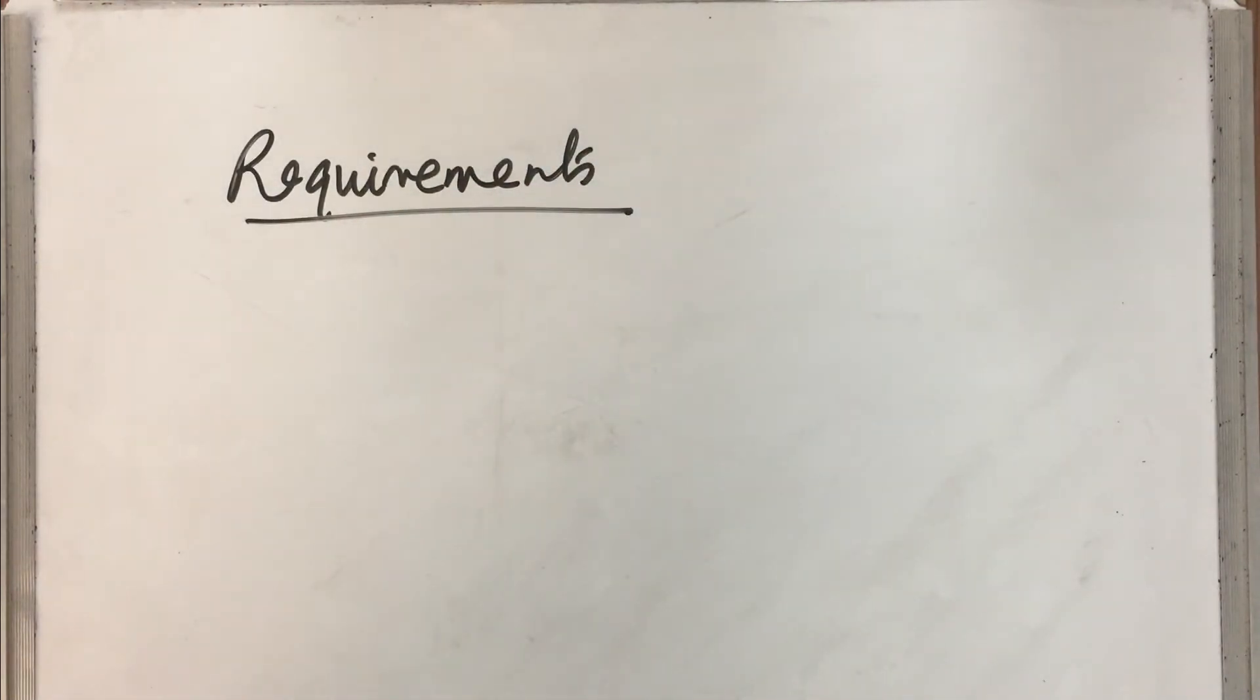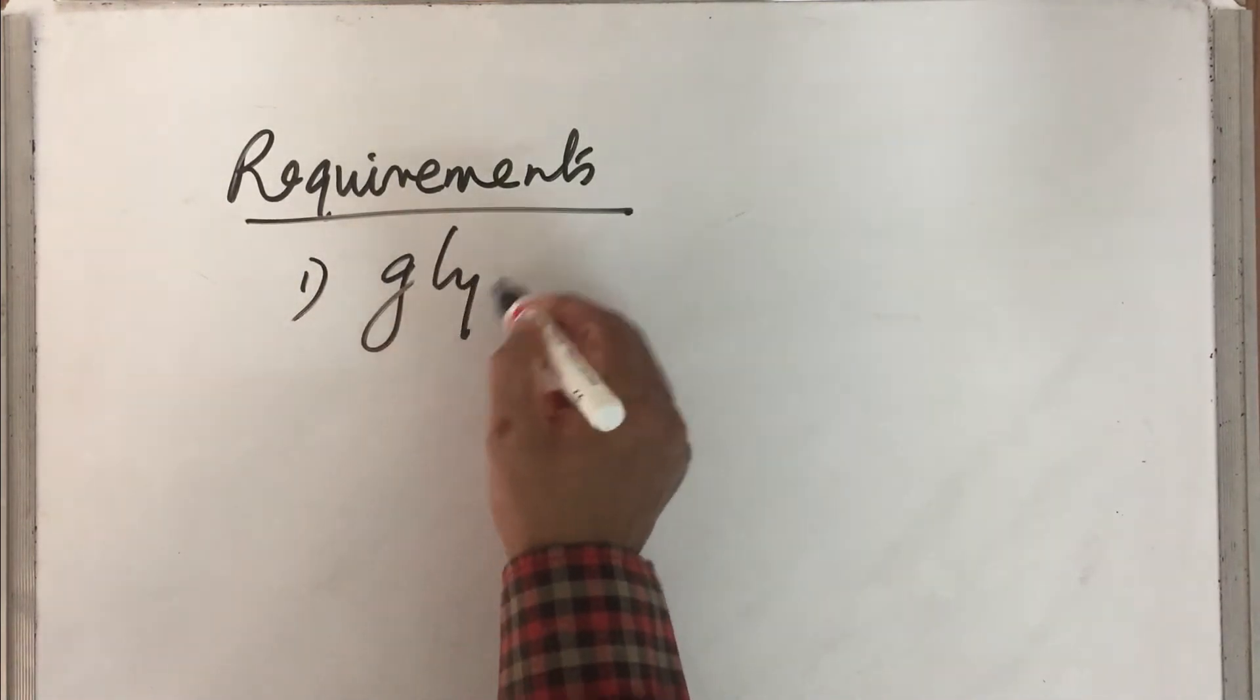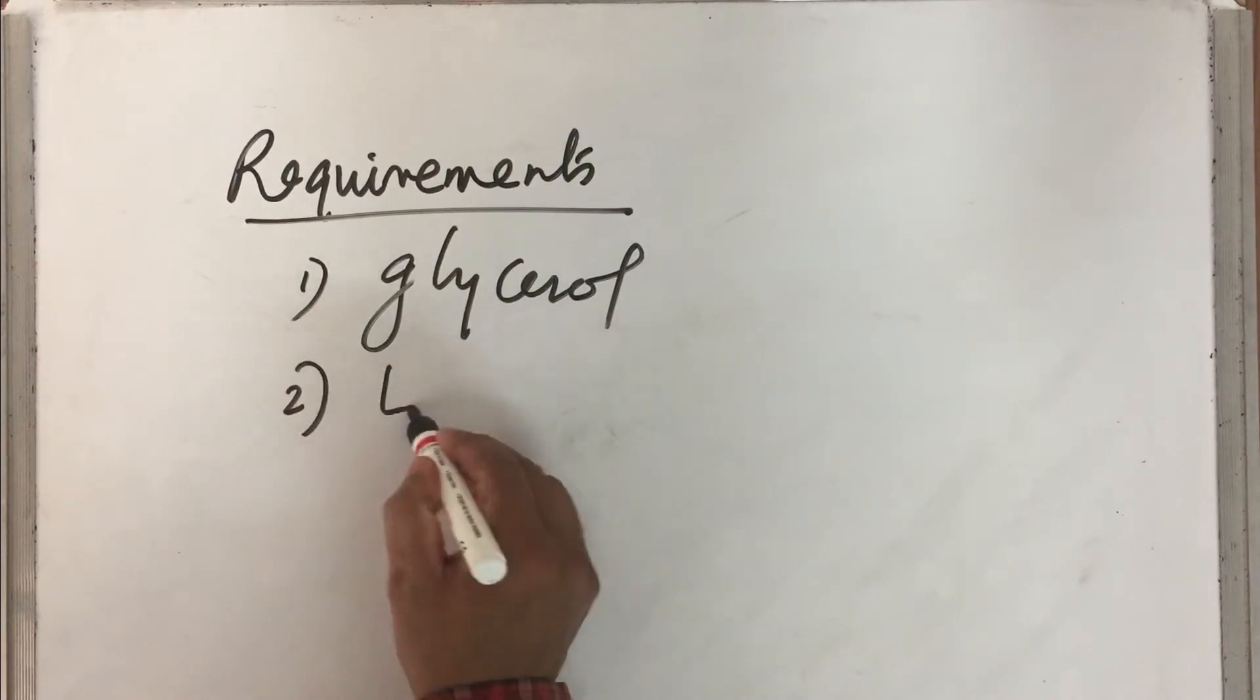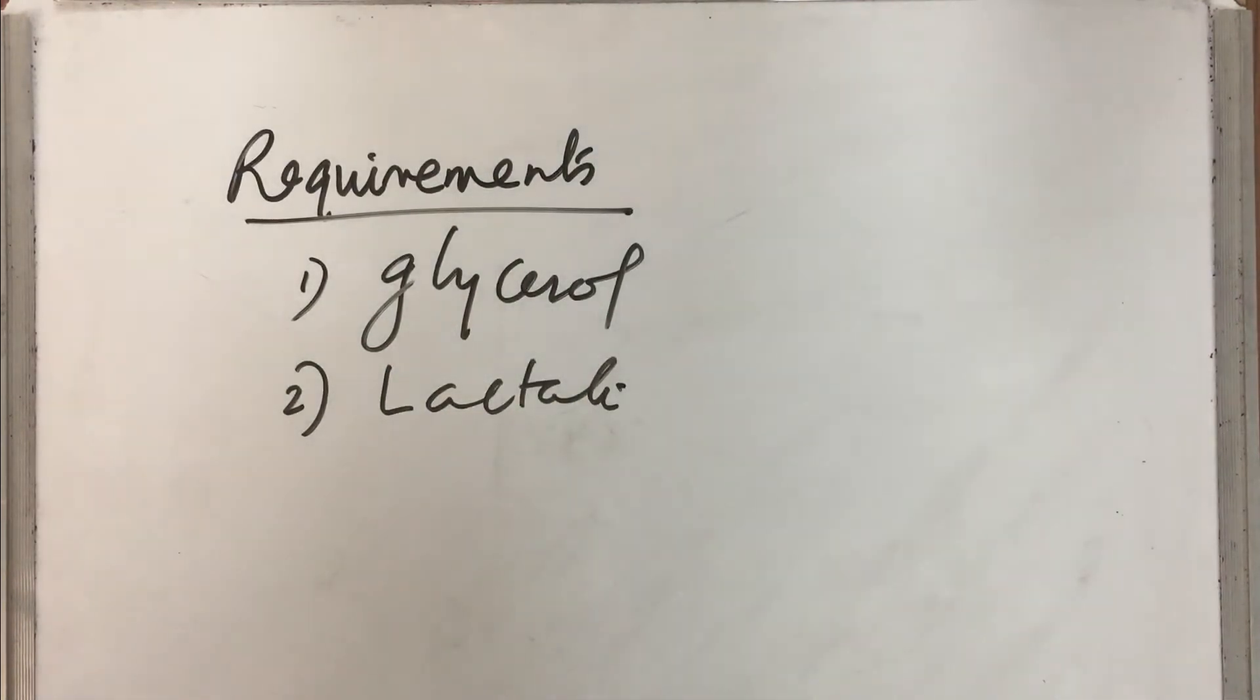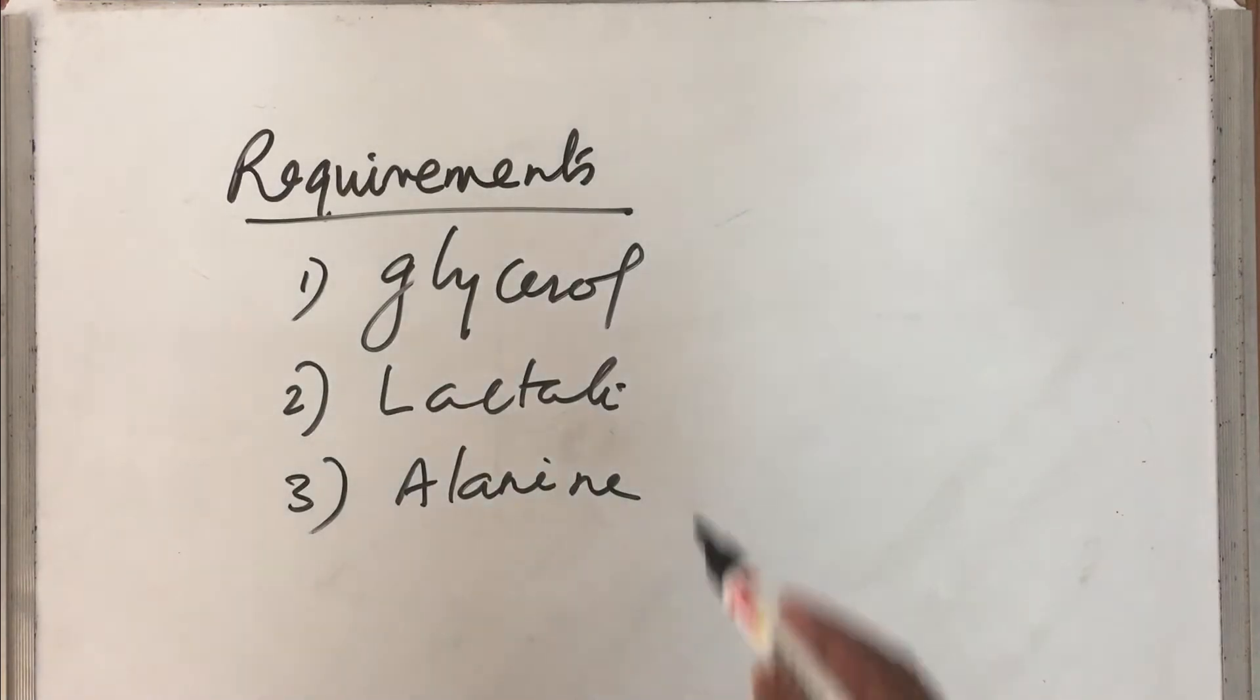The three requirements are three non-carbohydrate precursors. The first one is glycerol, second one is lactate, and the third is alanine. So glycerol is coming from fat, lactate is coming from carbohydrate, and alanine is coming from protein. These are the requirements. Now let us explain how each of these requirements are made available in liver or in kidney.